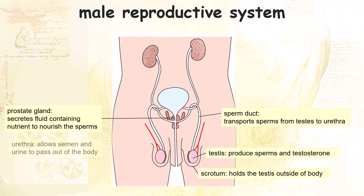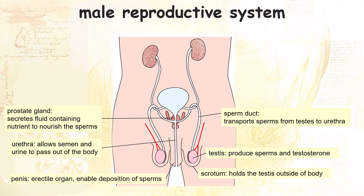The semen travels out through the urethra, which is also the same channel through which urine passes out of the body. Finally, the penis is the erectile organ that enables the deposition of sperm into the female body.